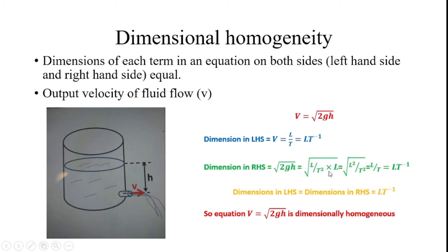So L by T squared into L gives L squared by T squared. Removing the square root removes the square values, giving L by T, which can be represented as L into T power minus 1.